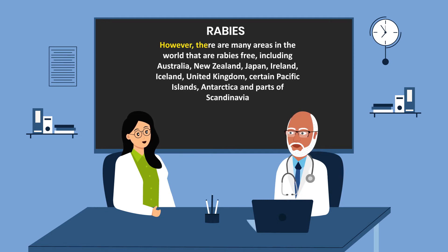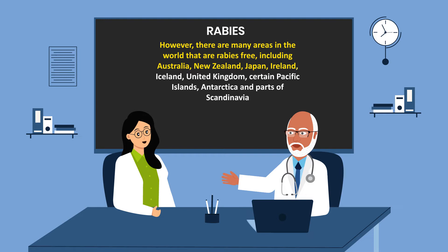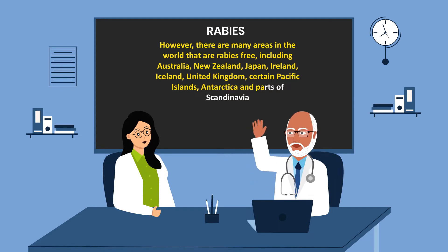However, there are many areas in the world that are rabies-free, including Australia, New Zealand, Japan, Ireland, Iceland, the United Kingdom, certain Pacific Islands, Antarctica, and parts of Scandinavia.